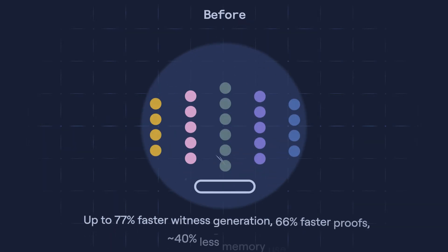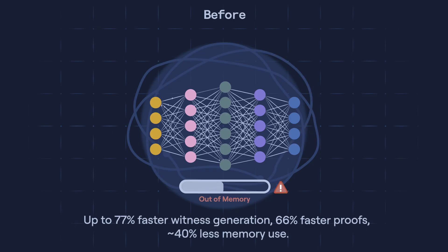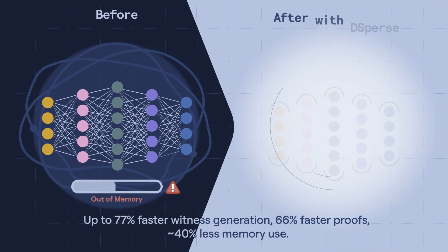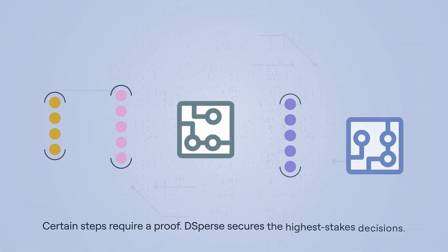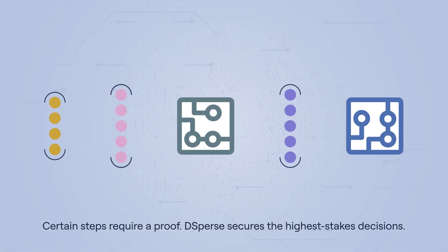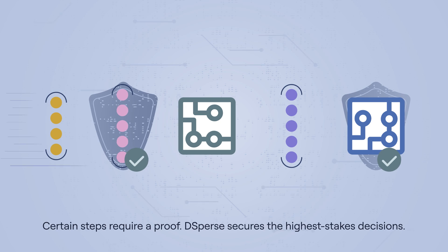Up to 77% faster witness generation, 66% faster proofs, 40% less memory use. Certain steps require a proof. D-Sperse secures the highest-stakes decisions.